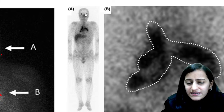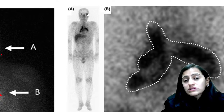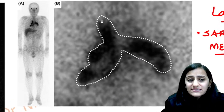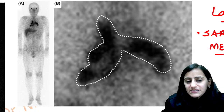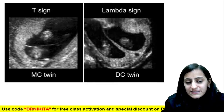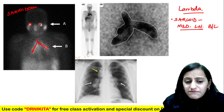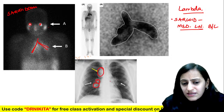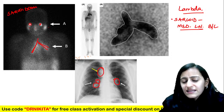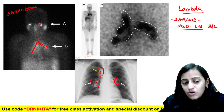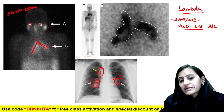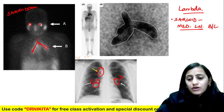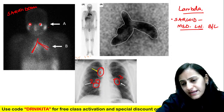On radiograph, you would see the enlarged right paratracheal, right hilar, and left hilar lymph nodes — which is called the 1-2-3 sign. Sarcoidosis involves the lacrimal glands; that's the lambda sign with increased uptake.